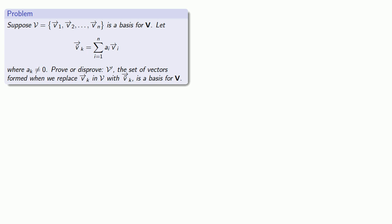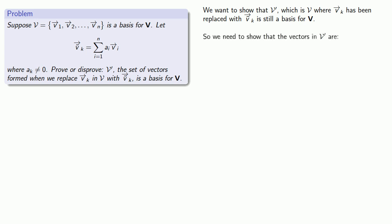We want to show that v prime, which is v where vk has been replaced by v tilde k, is still a basis for our original vector space. That means we need to show that the vectors in v prime are independent and that they span v. So let's prove independence first.